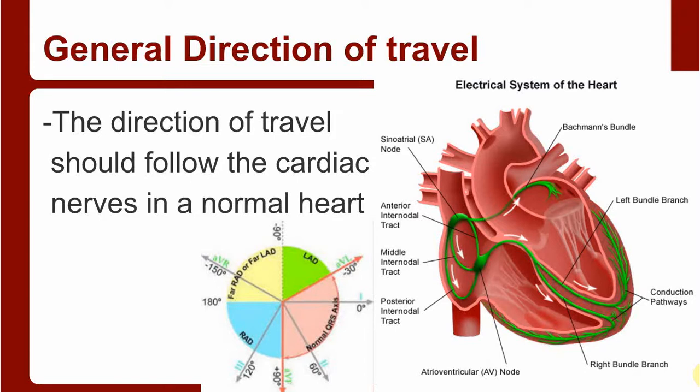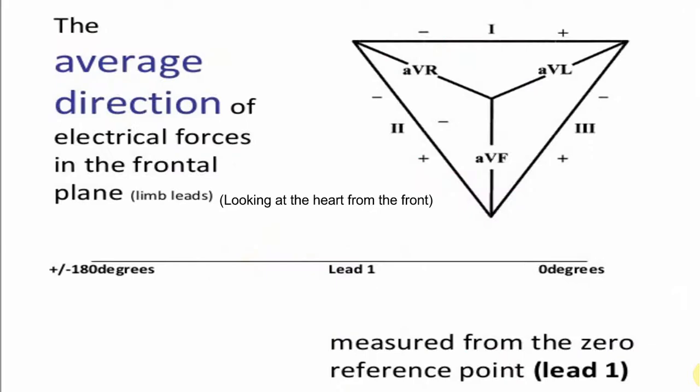You can see that if everything's normal, your typical axis should be at around 30 degrees. That just follows straight down the bundle of His and the bundle branches. This is the average direction.